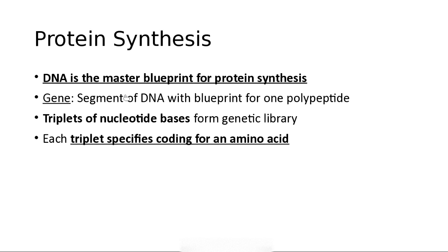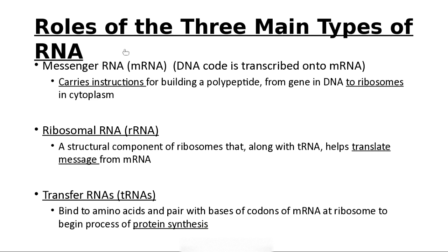A gene is a segment with a blueprint for one polypeptide or protein. Triplets of nucleotide bases are our genetic library — each triplet, called a codon, codes for an amino acid. So if you want a protein made of specific amino acids, you're going to have the triplets of nucleotide bases lined up to select them. The DNA code is copied off, or transcribed, onto messenger RNA, which takes instructions for building your protein from the gene in the DNA out to the ribosomes in the cytoplasm.